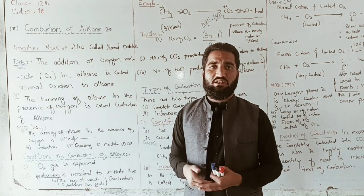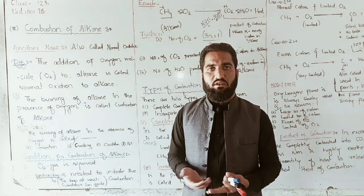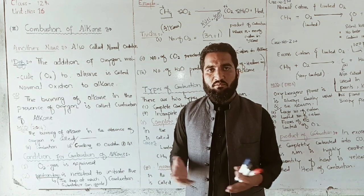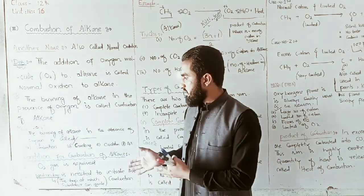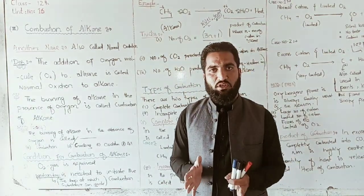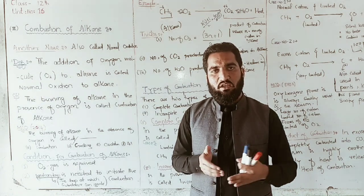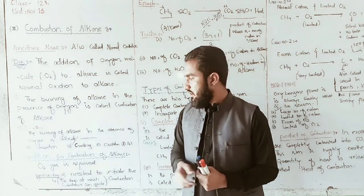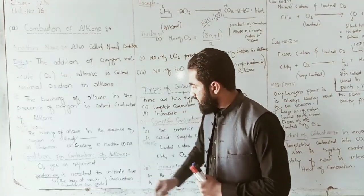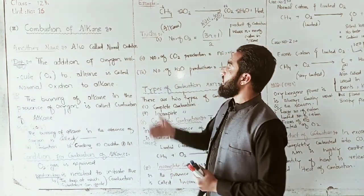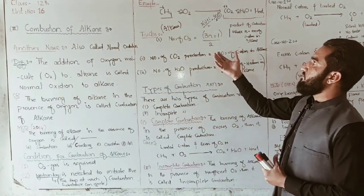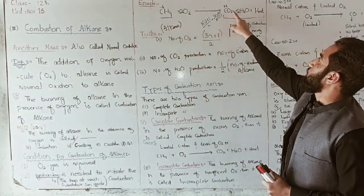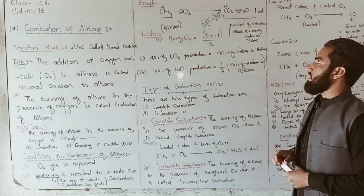The energy required to start the burning of alkane with oxygen is called ignition temperature — the temperature at which a substance can ignite. For example, when you react methane with oxygen, it gives CO2 plus water plus heat.